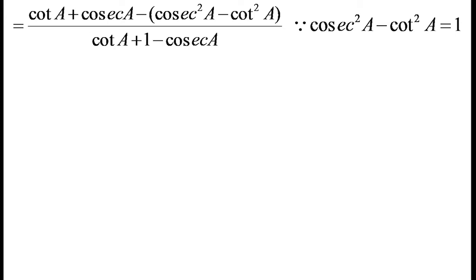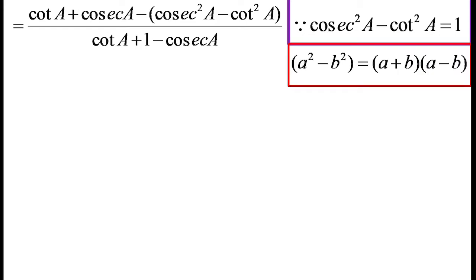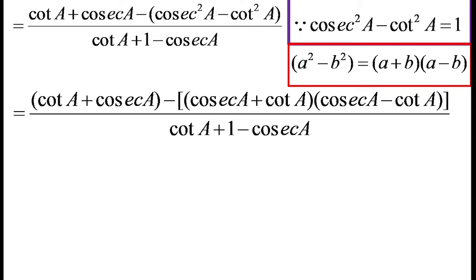Now look at the bracket in the numerator, what it is of the form a square minus b square. And we know that a square minus b square is a plus b into a minus b. Here a is cosec and b is cot. So we have to change the numerator: cot A plus cosec A minus cosec A plus cot A into cosec A minus cot A, a plus b into a minus b form.